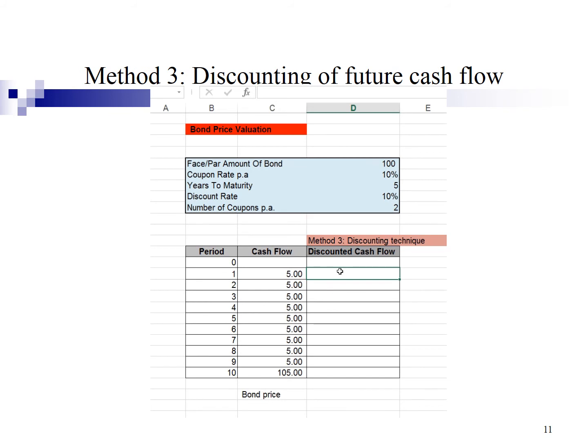Next, I will show you the third method, the discounting technique. Here, I'm going to discount the future cash flow one by one. I shall type equal point the cash flow divide by open bracket 1 plus discount rate divided by 2, close bracket, power of the period. I'm going to fix the reference cell for discount rate. I type F4 as well as divide by 2. All right, enter.